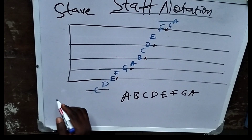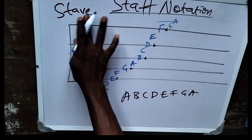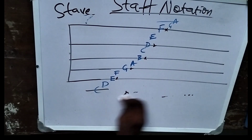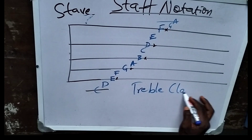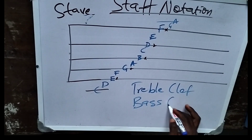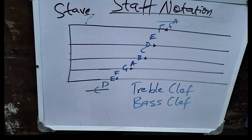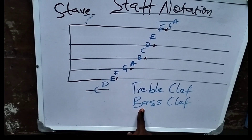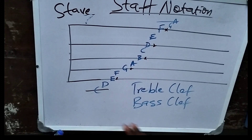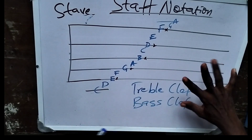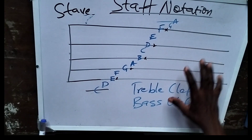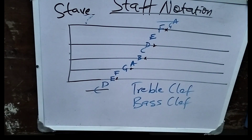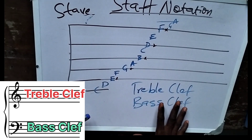Remember that what we are dealing with — we have two types of clefs. We have the treble clef and the bass clef. We have other ones, but the major ones we are dealing with: the treble clef is for the right hand, while the bass clef is for the left hand. So if you are seeing anything here, just know that it is treble clef. When we enter bass clef, you will see. We have the sign for bass clef and we also have the sign for treble clef.